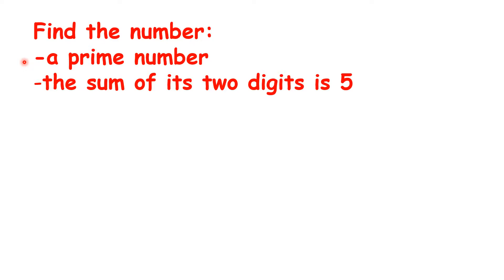So remember, prime numbers are numbers which aren't in any times table, except of course for their own times table and the one times table. So ten isn't a prime number, because it's in the two and five times table as well.